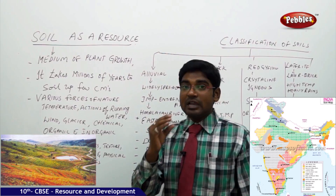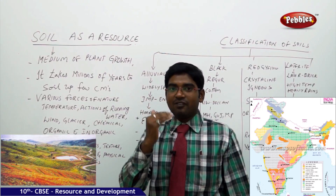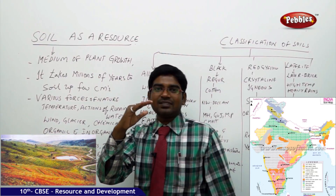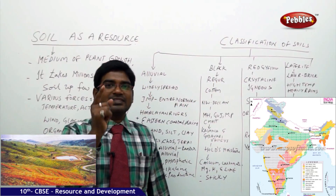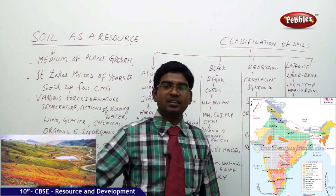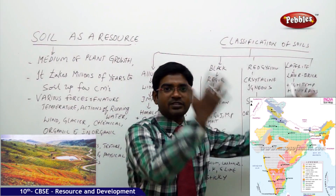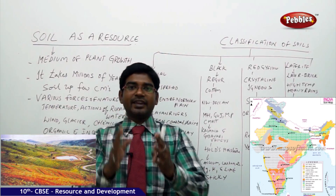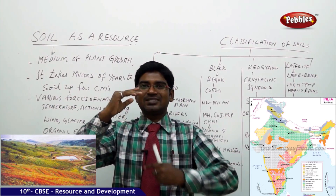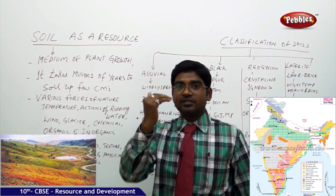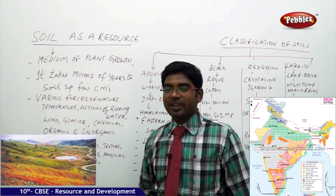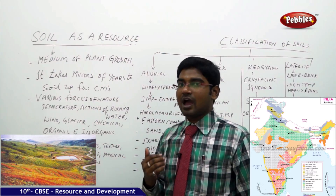It takes millions of years to develop soil even by a centimeter on the earth. For us, it takes less than a second to remove the entire soil from there with a crane — you take the entire edge and throw it somewhere. But it takes nearly millions of years to grow the soil pattern by a centimeter. It is really very tough.